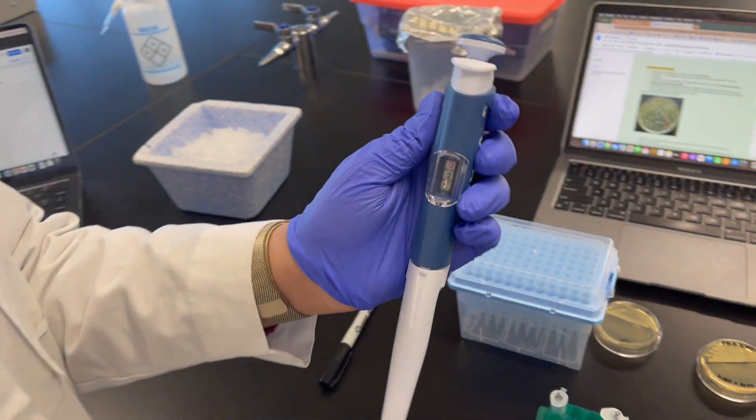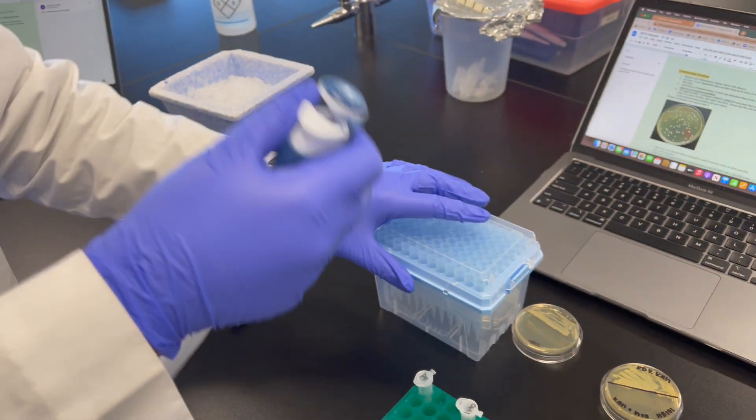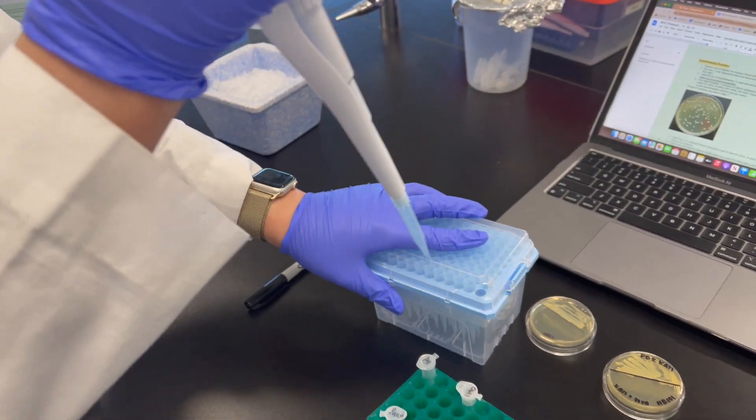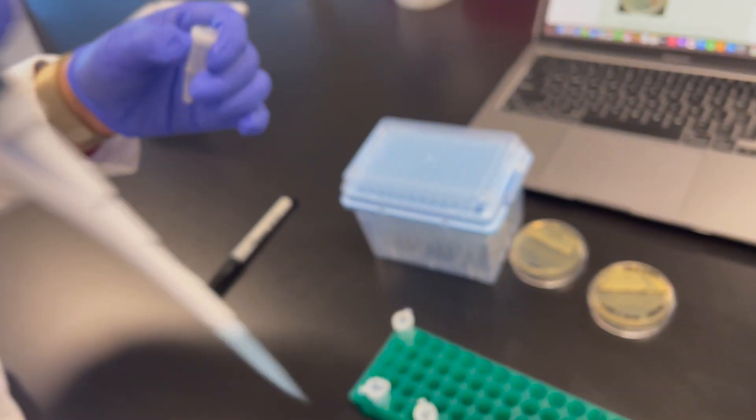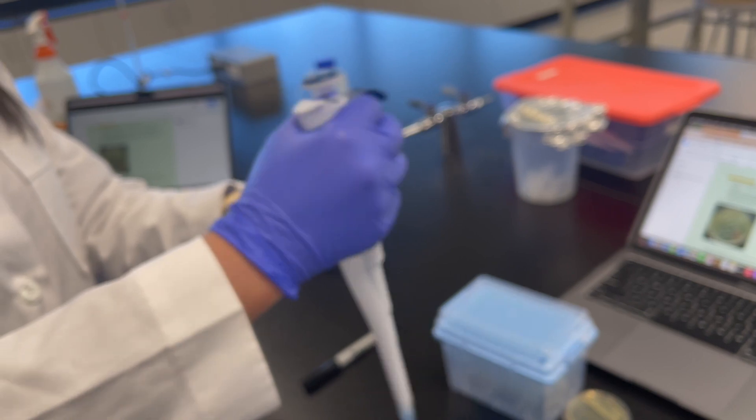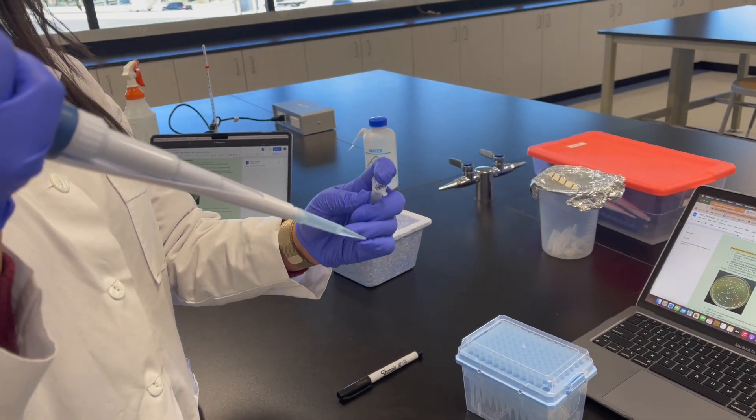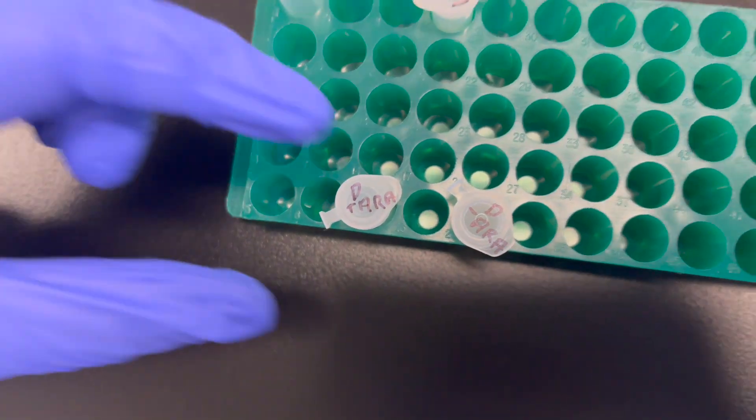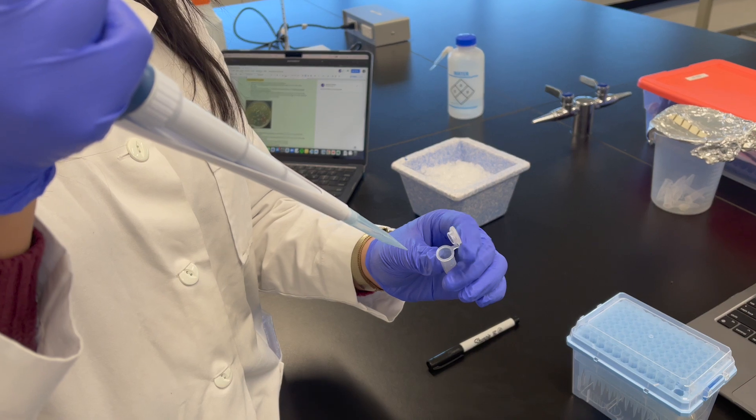Set a P1000 micropipette to 250 microliters. Grab the transformation solution and transfer the 250 microliters to the tube labeled D plus ARA. Repeat this step for the remaining three tubes.